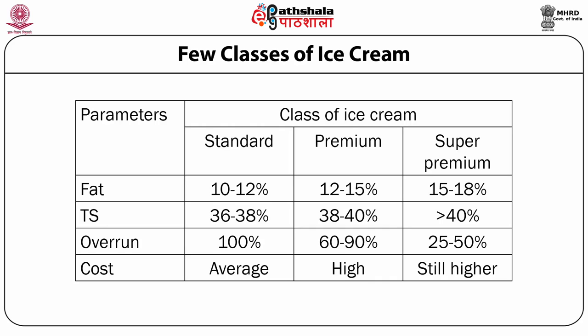The next slide shows a few classes of ice cream with their fat content, total solids, overrun, and relative cost. The classes are: standard ice cream, premium, and super premium. As we go from standard to premium to super premium, the milk fat content increases. The price also increases because fat is the costliest milk component. Those without health concerns like coronary heart disease, obesity, or diabetes would love premium ice cream for the taste and richness that milk fat confers.